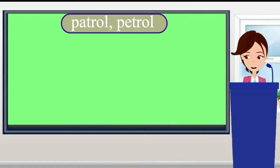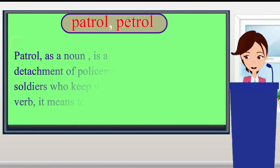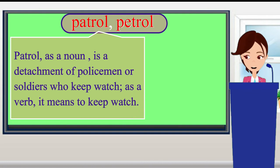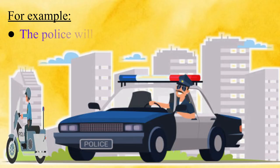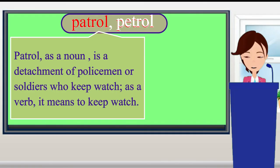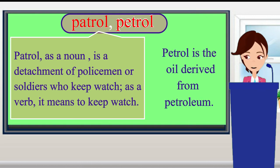Look at these two words: 'patrol' and 'petrol.' Patrol as a noun is a detachment of policemen or soldiers who keep watch; as a verb, it means to keep watch. For example: 'The police will patrol the streets.' Petrol is oil derived from petroleum.